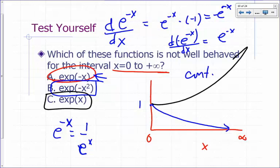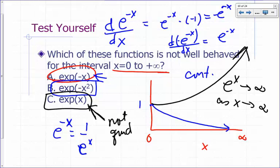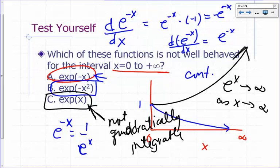Well, e to the x is going to go up like that. So e to the x approaches infinity as x approaches infinity, so that means the square of that will do the same thing, so this is not quadratically integrable. So that function e to the x for the interval 0 to infinity is not well-behaved.